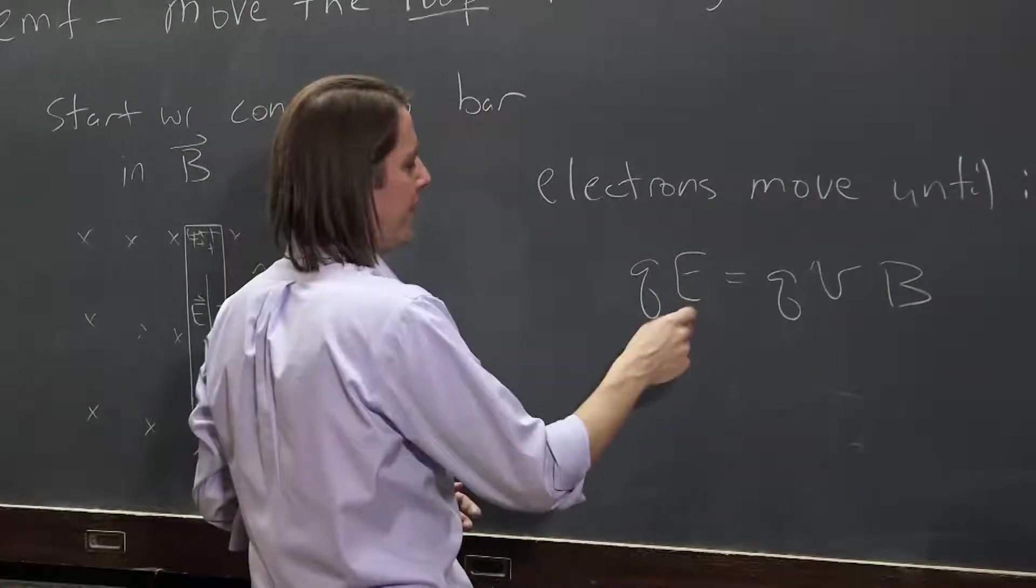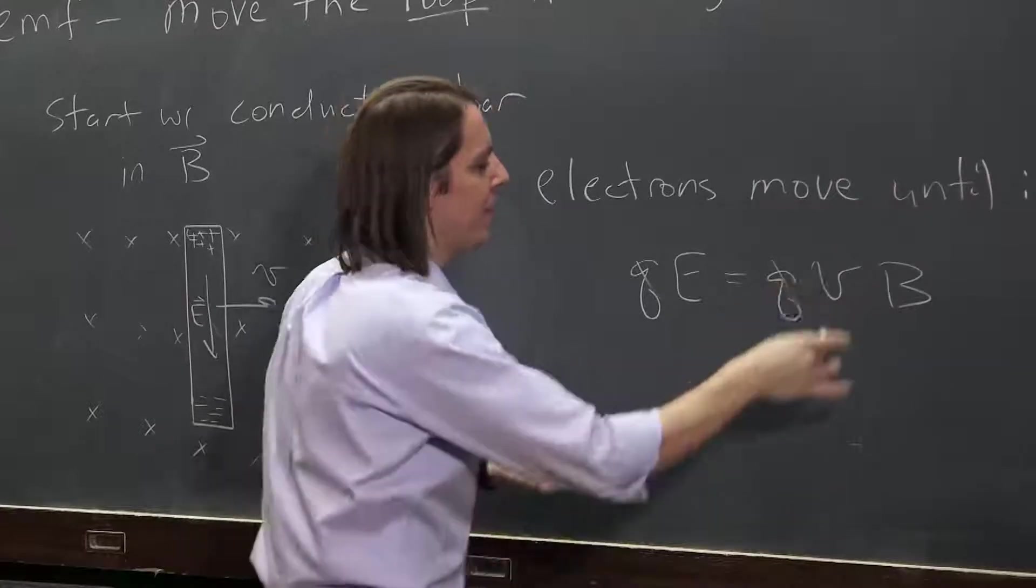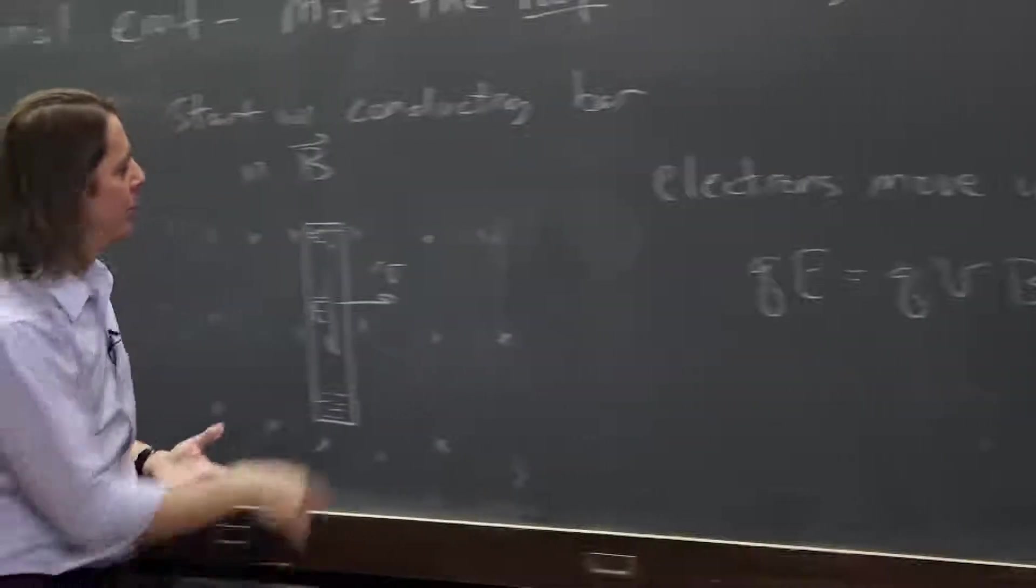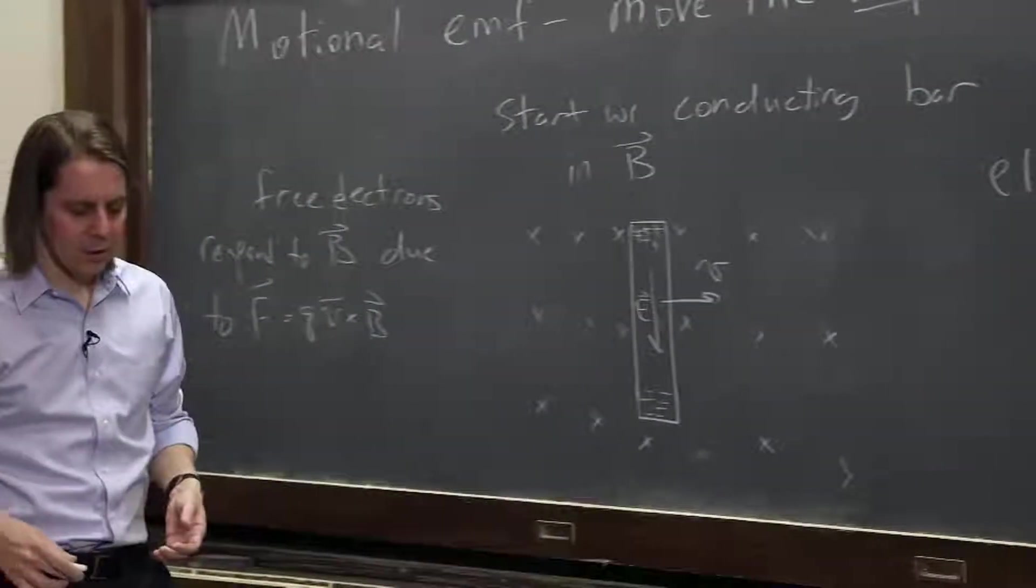So then what you find is the Qs go away, and you can figure out that the electric field you generate will depend on the magnetic field and how fast you move.